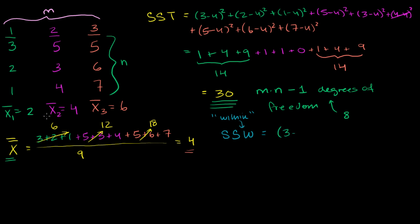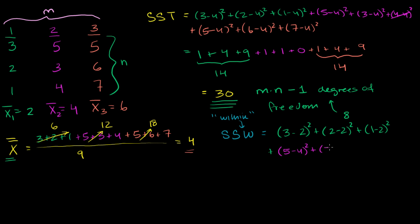So for the first group: (3 minus 2) squared, plus (2 minus 2) squared, plus (1 minus 2) squared, plus (1 minus 2) squared. Then for the second group, the distance between each data point and its mean: (5 minus 4) squared, plus (5 minus 4) squared, plus (3 minus 4) squared, plus (4 minus 4) squared. And then for the third group: (5 minus 6) squared, plus (6 minus 6) squared, plus (7 minus 6) squared.